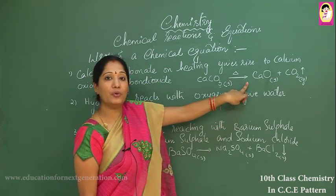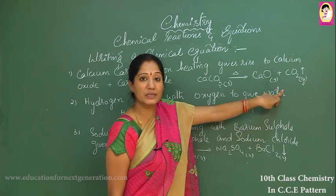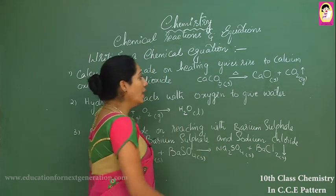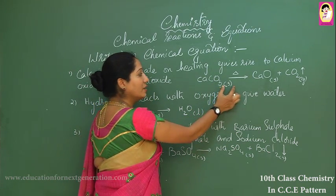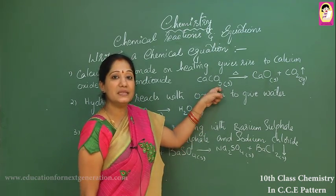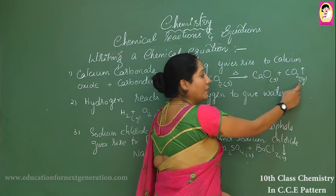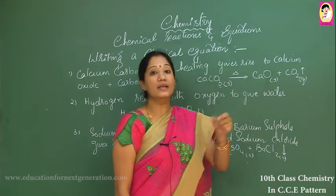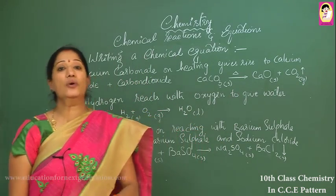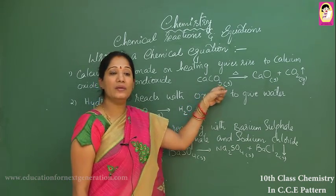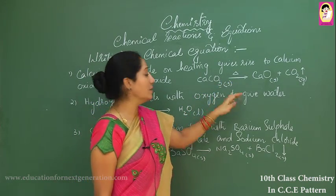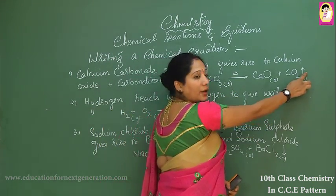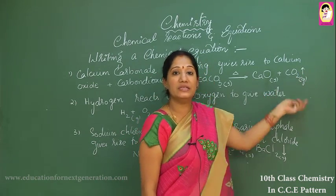The head of the arrow faces toward the product and the tail faces toward the reactant. At the base of the reactant calcium carbonate, 's' in brackets indicates it is a solid, and 'g' indicates a gas. In a chemical equation, if there is a difference in the physical state of the reactant or product, you must specify it using alphabets written as subscript symbols. An upward arrow sign represents that a gas is obtained which is being evaporated or liberated.